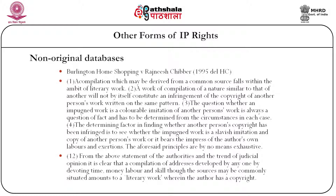The determining factor in finding whether copyright has been infringed is to see whether the impugned work is a slavish imitation and copy of another person's work or bears the impress of the author's own labor and exertions. The ratio of the decision states: a compilation of addresses developed by anyone devoting time, money, labor, and skill — though the sources may be commonly situated — amounts to a literary work wherein the author has a copyright. The logic seems to be that wherever there is sufficient investment by the plaintiff and slavish imitation is found, the court can protect such databases even beyond what the statute expressly provides.